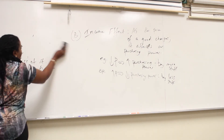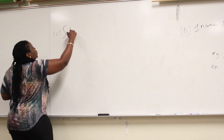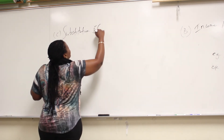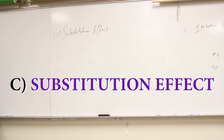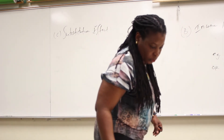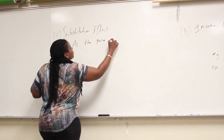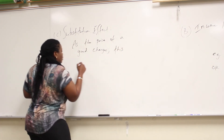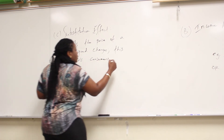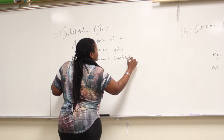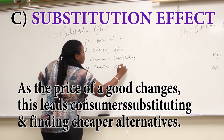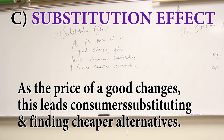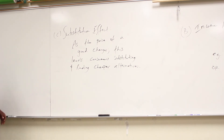Here's the last one. The last thing that explains the law of demand and the downward sloping demand curve is the substitution effect. This says that the price of a good changes, leading consumers to substitute and find cheaper alternatives. It's not like you're looking for a substitute like Pepsi and Coca-Cola — it's slightly different.